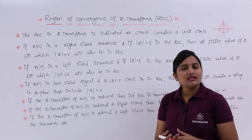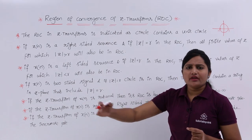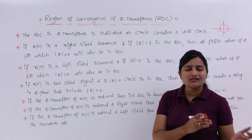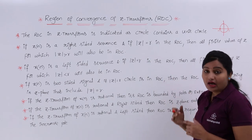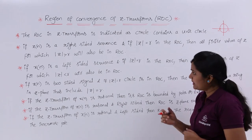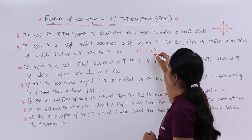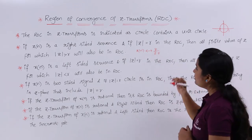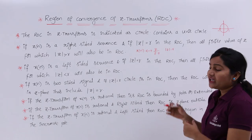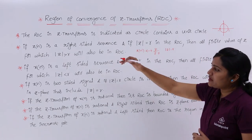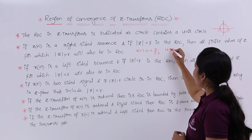If X of n is a right-sided sequence like u of n, a^n u of n, or (1/2)^n u of n — all u of n related sequences are right sided. If mod Z equal to R is in the ROC, meaning for a Z transform like Z/(Z−R) the pole is at mod Z = R, then all finite values of Z for which mod Z greater than R will also be in the ROC. The ROC of that right-sided signal will be mod Z greater than R.